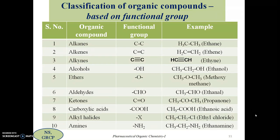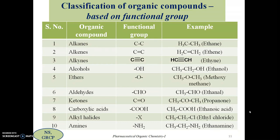This is the classification of organic compounds based on the functional group. We discussed classification based on the carbon chain — four types — and classification based on functional group — the most important 10 classes. In the next class, we will discuss the nomenclature of organic compounds, covering common names and IUPAC names for these 10 different classes.